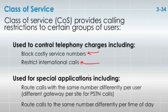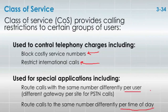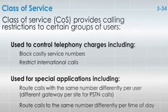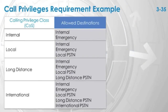But telephony class of service isn't just about restrictions. It gives us the ability to do some fancy things, like route calls going to the same called number differently per user. You might send one dialed number one way, and that same dialed number a different way based on the user that made the call, or put time-of-day variations in — send the call one way during one time of day and another way during a different time of day.